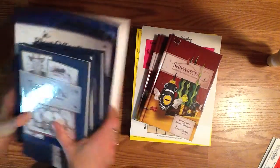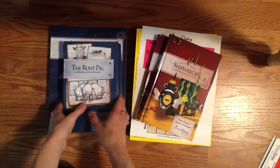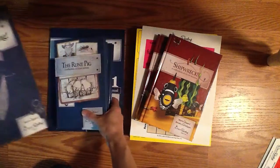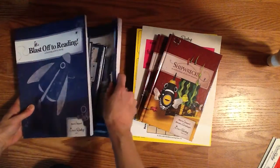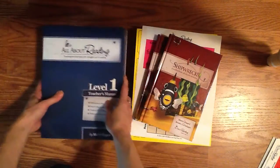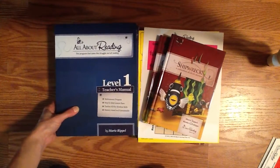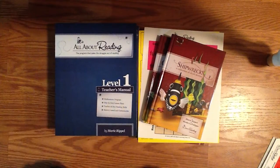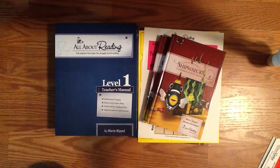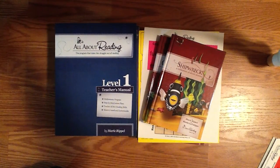So there is your sneak peek of All About Reading. If this looks like something that interests you, or you have further questions, please contact me, Star Williams, at 503-758-3636. Thank you.